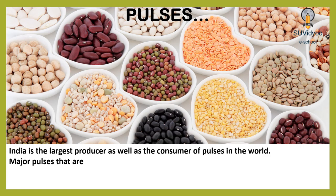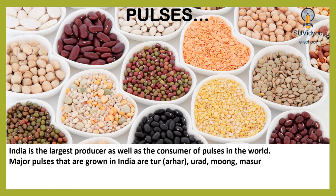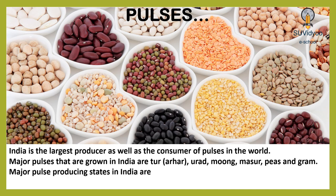Major pulses grown in India are Tur (i.e. Arhar), Urad, Moong, Masur, Peas and Gram. Major pulse-producing states in India are Madhya Pradesh, Rajasthan, Maharashtra, Uttar Pradesh and Karnataka.